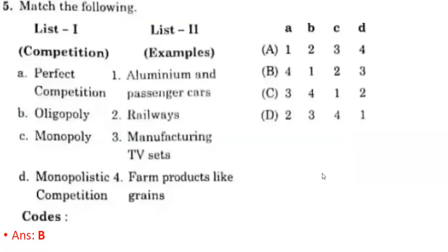Fifth question — match the following competition types versus examples. The correct option is B: four-one-two-three. Perfect competition — farm products like grains; oligopoly — aluminium and passenger cars; monopoly — railways, as in India only Indian Railways is owned by the central government; monopolistic competition — manufacturing TV sets.